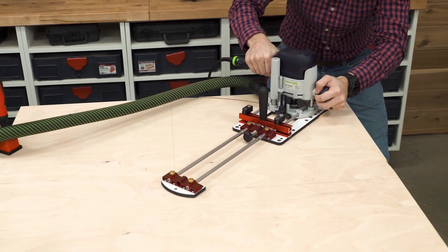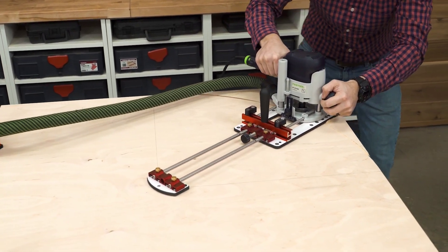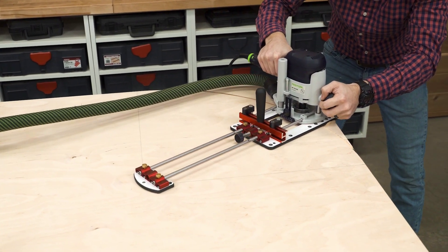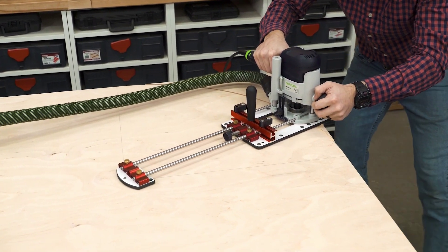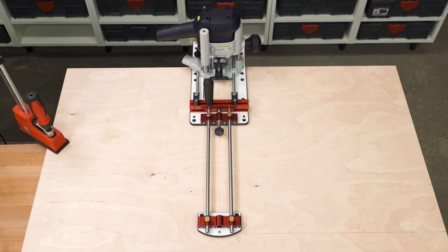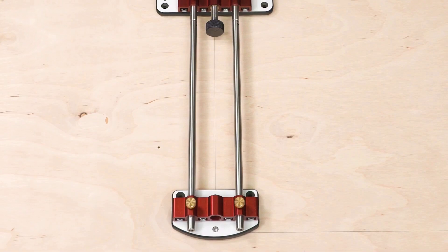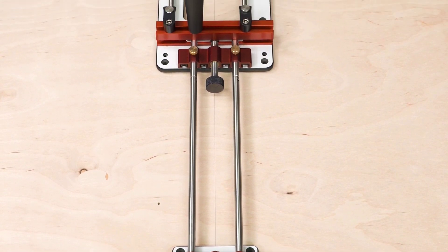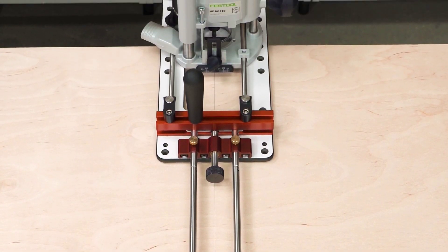If you need to go beyond that, the standard extension guide rods will take you all the way out to a 45 inch diameter or add optional extensions to go as far as you need. And when you're cutting arcs, the axis point is centered between the support rods and directly in line with your bit.